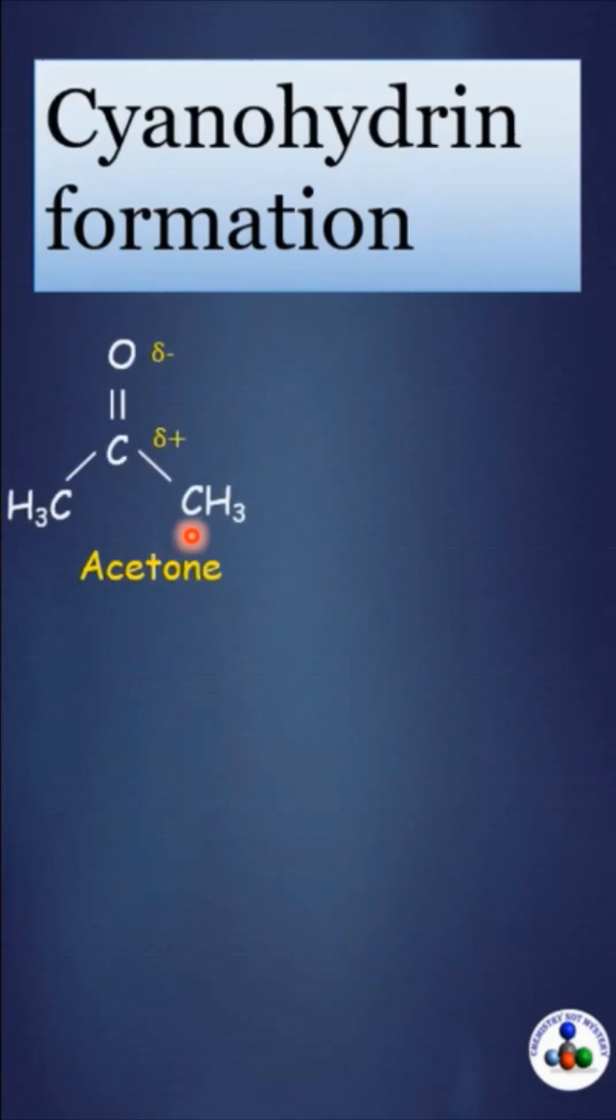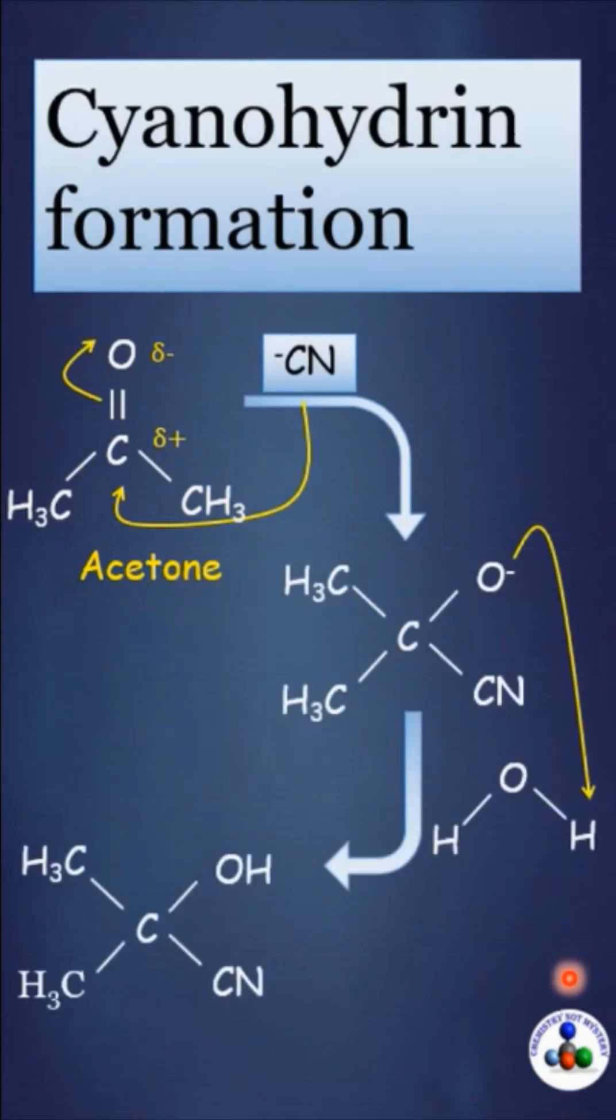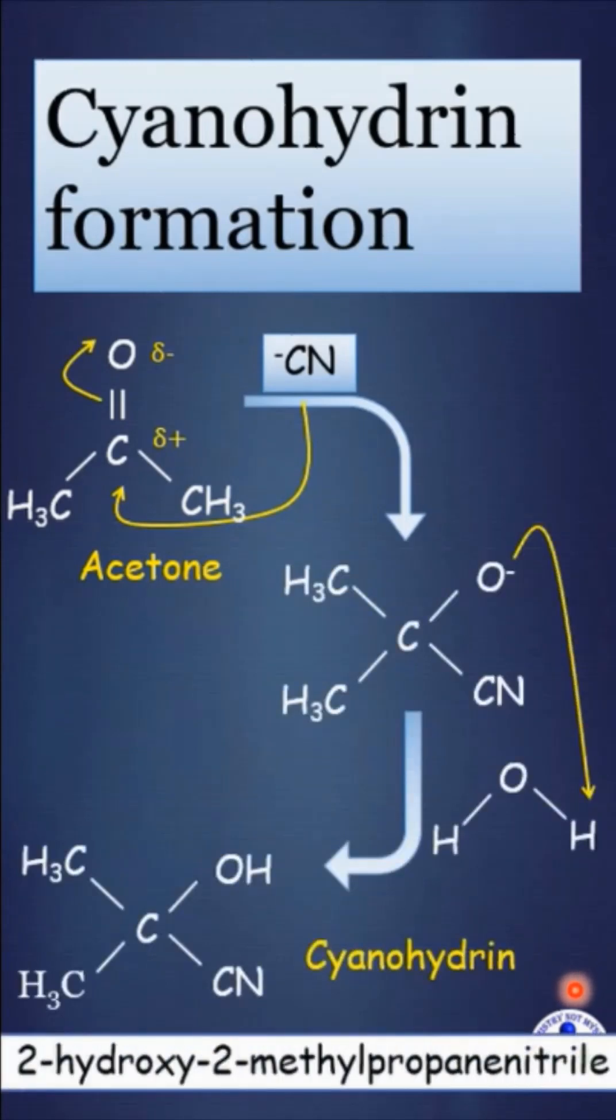Similarly, when acetone reacts with hydrogen cyanide, cyanohydrin of acetone is produced and its name is 2-methyl-2-hydroxypropane nitrile.